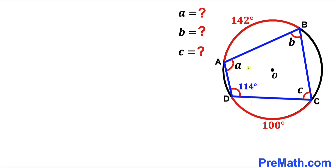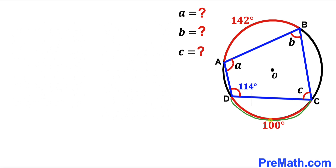Welcome to PreMath. In this video we have a blue quadrilateral ABCD fully inscribed in a circle with center O, such that the interior angles are lowercase a, b, c, and angle ADC is 114 degrees. Moreover, arc AB measures 142 degrees, arc CD measures 100 degrees, and our task is to calculate the values of angles A, B, and C.